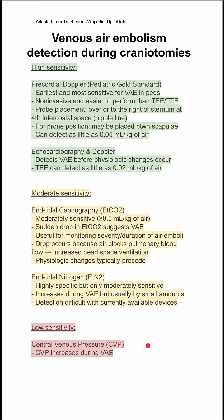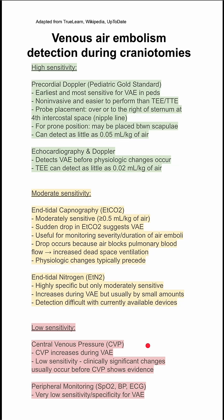The low sensitivity methods are central venous pressure, which increases during a venous air embolism. This is usually a late finding and doesn't really help. There's also peripheral monitoring that might show some signs, like SpO2, blood pressure, or EKG, but these also have very low sensitivity and specificity for venous air embolism.